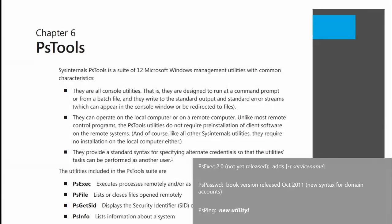The next one I want to talk about is PSPassword. The book is actually accurate and complete on this. The reason I'm bringing it up is it was accurate and complete before PSPassword itself was. PSPassword is a utility that's been around for a really long time — Mark first wrote it back in the 90s — it's a command-line program that lets you set a password on a user account. While writing the book, we started rethinking some of the command-line options, and PSPassword had some issues with domain accounts, so it got a major redo with totally different syntax for domain and local accounts.